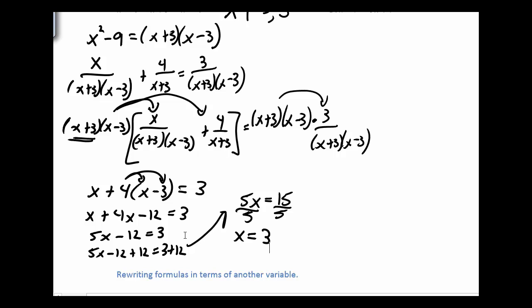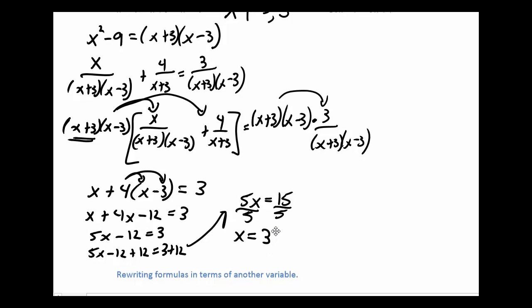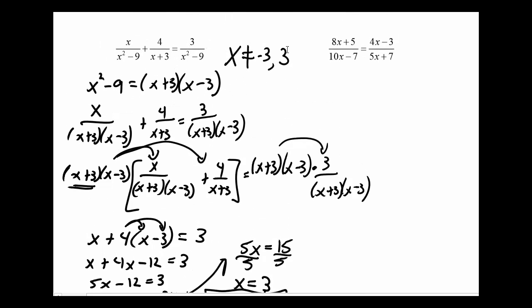Now we've got a problem. Way back at the beginning, I said we can multiply by that expression as long as x doesn't turn out to be negative 3 or 3. Well, I found that the only solution is x equals 3 — but I can only get 3 if I can justify that it's not 3, and I can't justify that. So there's no solution to this particular problem. Be careful with those initial expressions: when multiplying by a variable expression, identify what number would make it zero, because you might have to exclude that value from your solution.